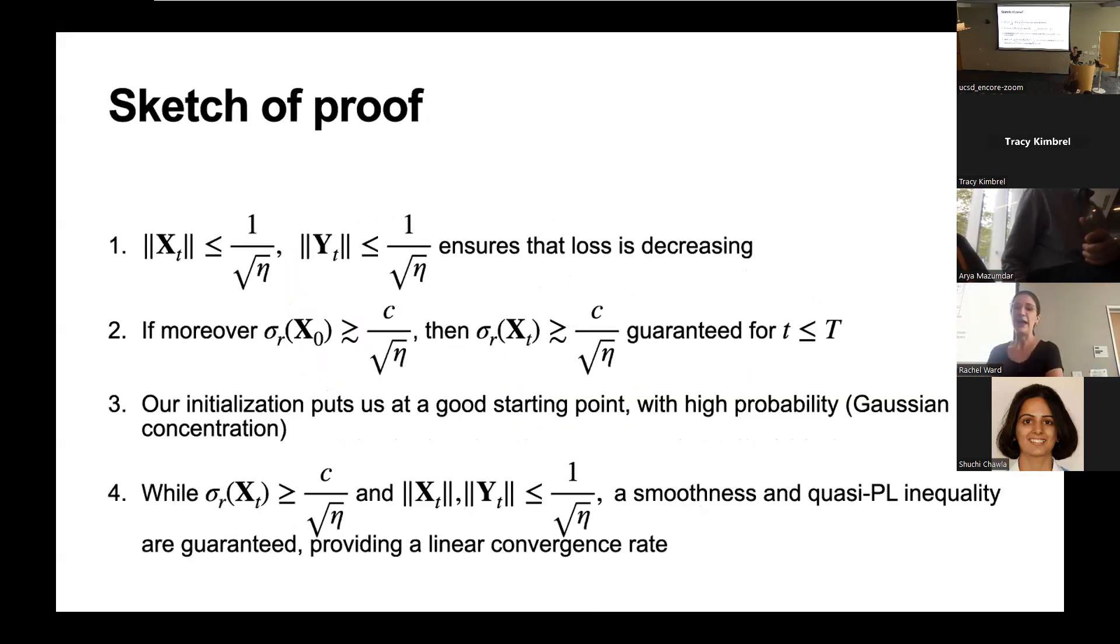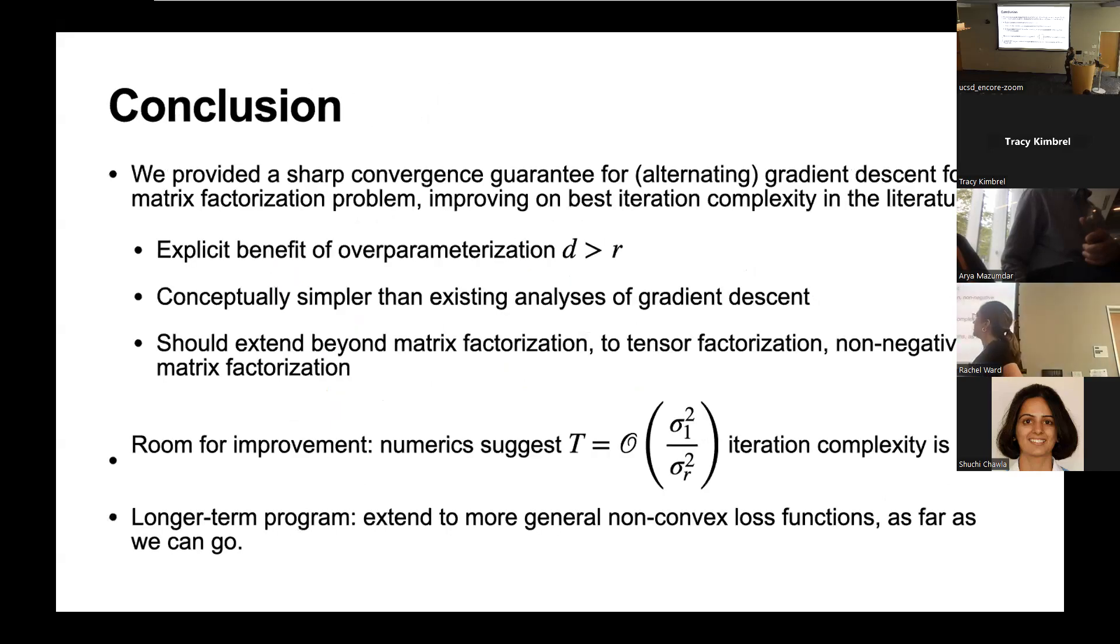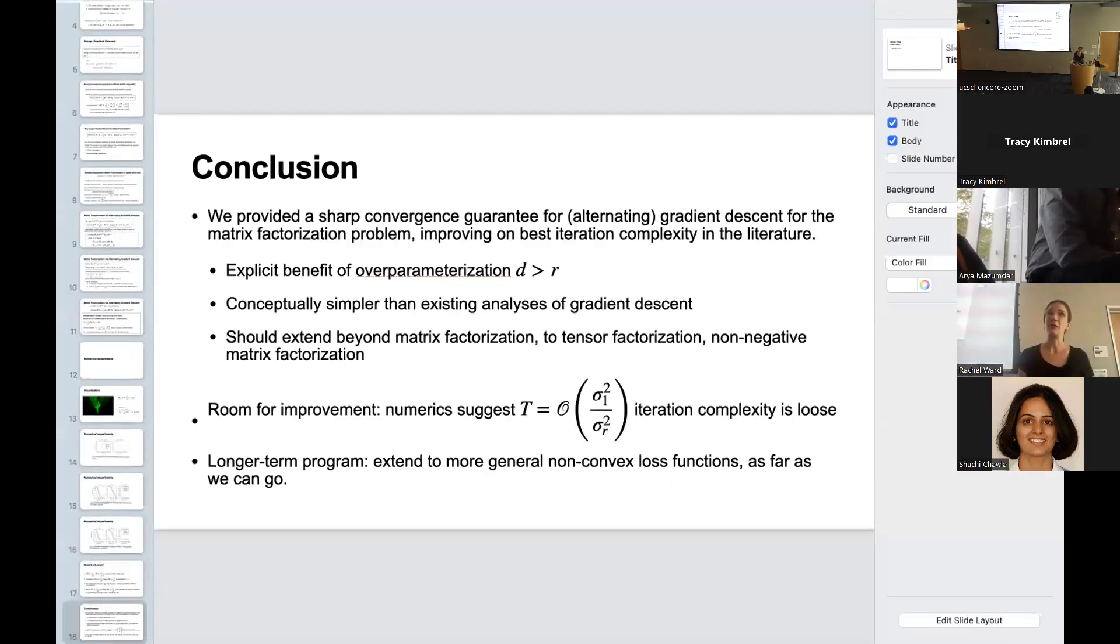I'm so sorry. I won't get to the sketch of proof, but I just want to say that it's a very conceptually simple proof and I have the feeling that this should extend to a lot of further problems. We're writing up the extension of this to tensor factorization which actually gives a new state-of-the-art algorithm for doing tensor factorization, so it's not just a theoretical thing, so we're excited about that. And we think it should extend to stochastic gradient descent and to matrix sensing and so on. I'm so sorry for going over time.